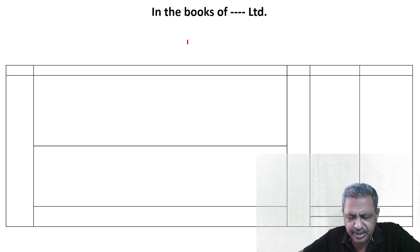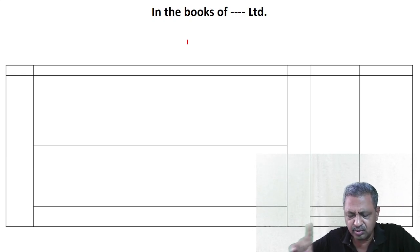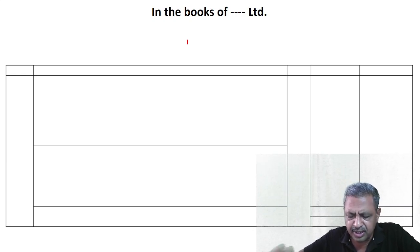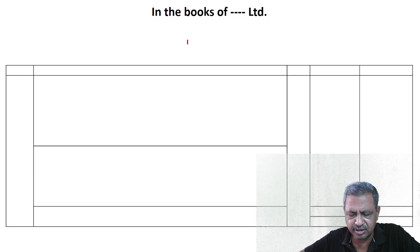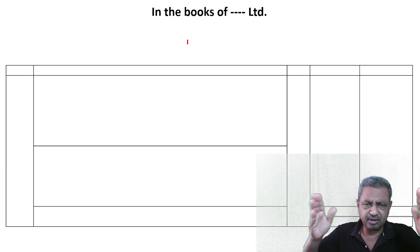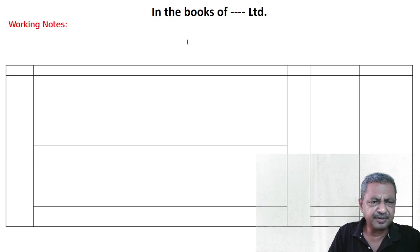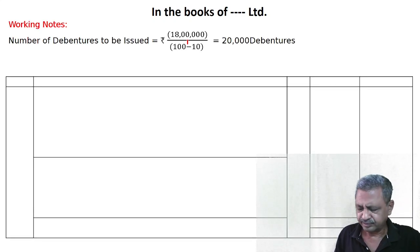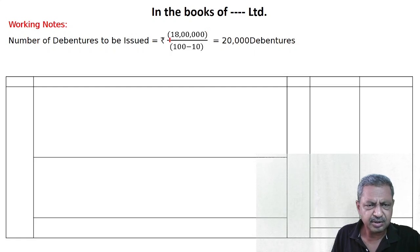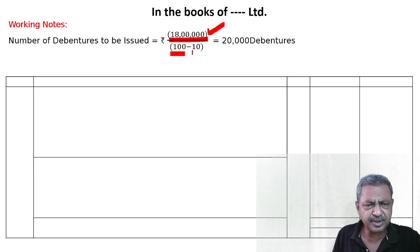The question is: Romy Ltd acquired assets of Rs. 20 lakhs and took over liabilities of 2 lakhs. Asset minus liabilities equals capital, i.e., 20 minus 2 equals 18 lakhs, from Copil Enterprises. Romy Ltd issued 8% debentures at a discount of 10% as purchase consideration. Pass journal entries. So 10% discount mein debenture issued. Number of debentures to be issued — purchase consideration is 18 lakhs, and they will give Rs. 100 debentures at Rs. 10 discount.